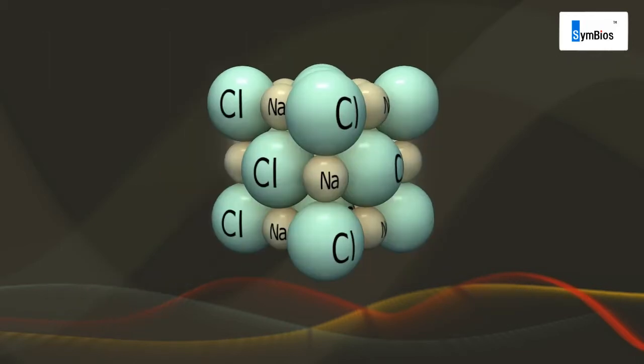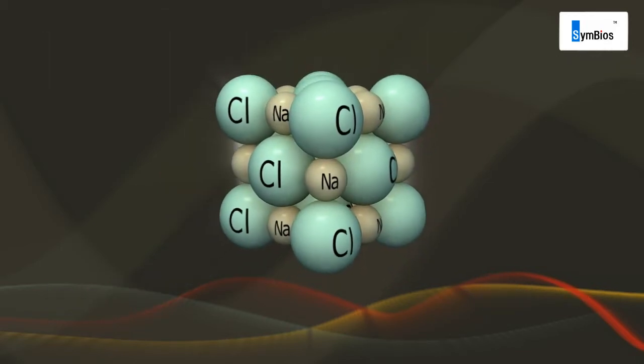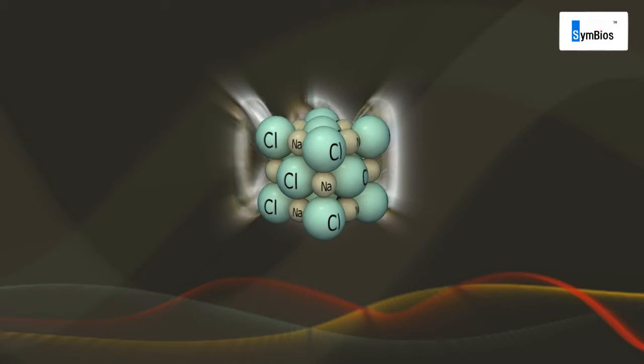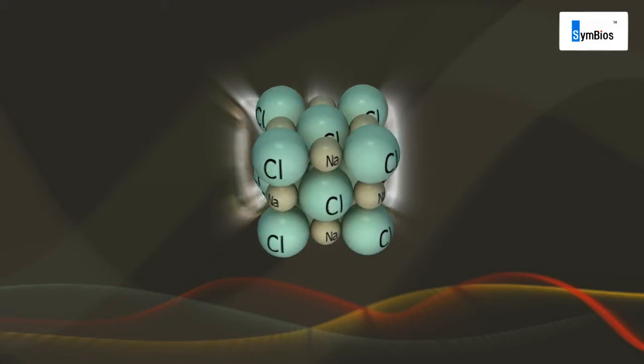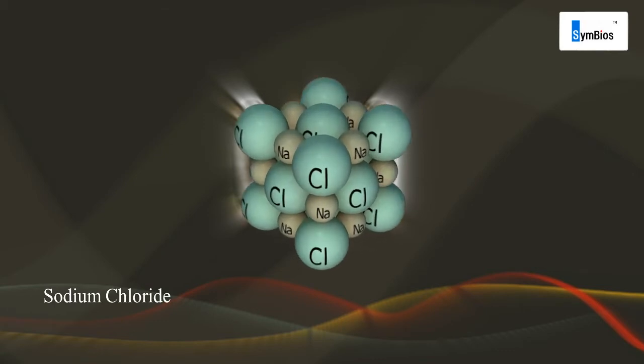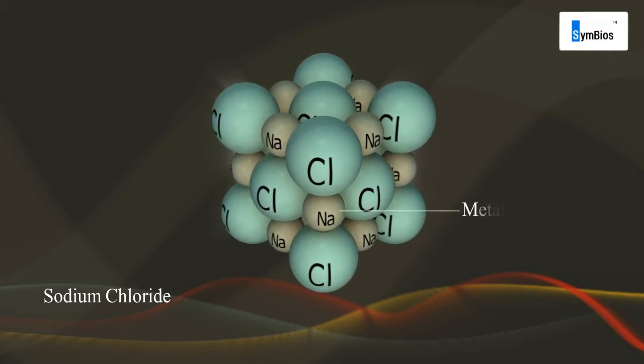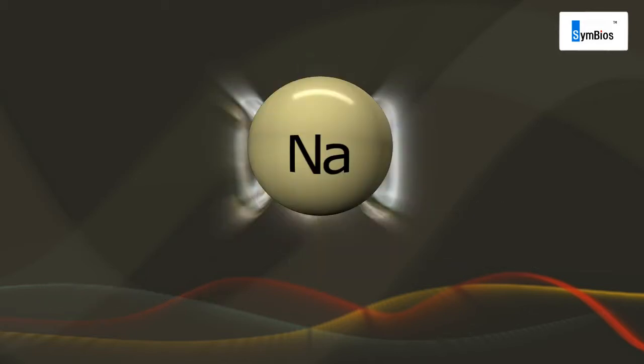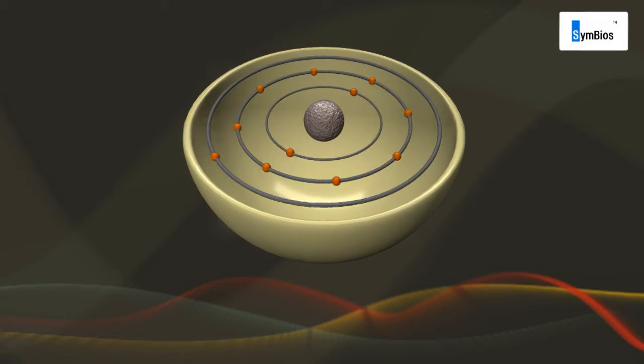The formation of ionic compounds can be explained in detail with the example of sodium chloride. In sodium chloride compound, sodium is a metal and chlorine is a nonmetal. The atomic number of sodium is 11, so its electronic configuration is 2, 8, 1.